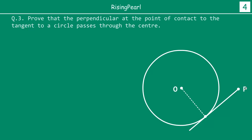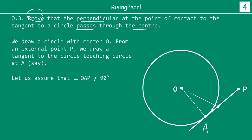We have a circle with center O, and from an external point P we have drawn a tangent. The point where this straight line touches the circle, let us call this A. The question is telling us that if you draw a perpendicular at this point, we have to prove that the perpendicular must pass through the center of the circle.